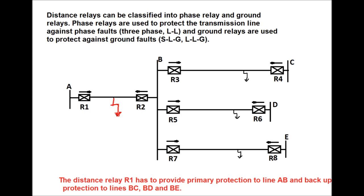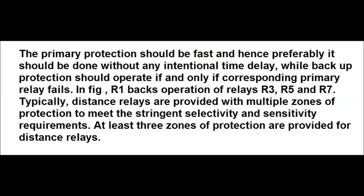From substation B, the shortest line is BD and the longest line is BC; BE is the medium line. Relay R1 has to provide primary protection to line AB as well as backup protection to lines BC, BD, and BE in the forward direction of fault. Primary protection should be fast and preferably done without any intentional time delay, while backup protection should operate only if the corresponding primary relay fails. R1 relay backs up operation of relays R3, R5, and R7. Distance relays are provided with multiple zones of protection to meet stringent selectivity and sensitivity requirements.